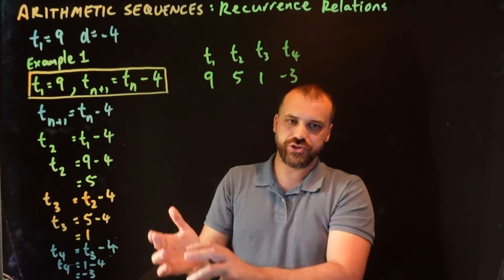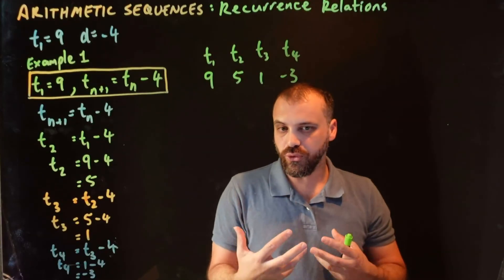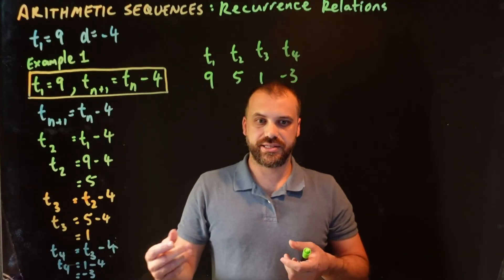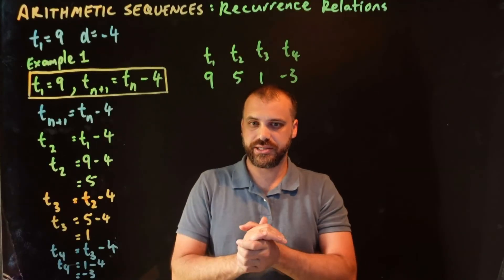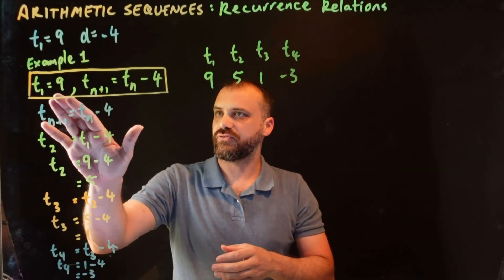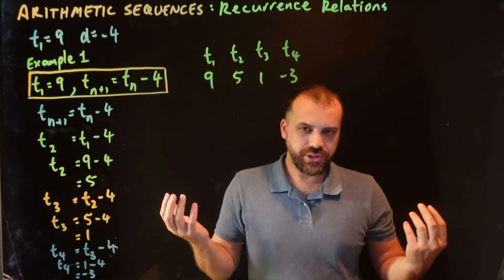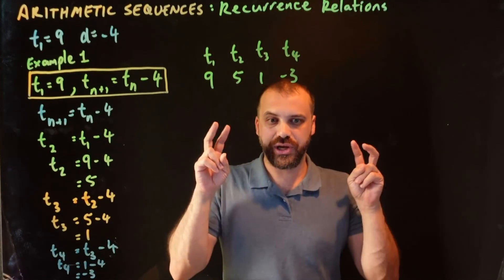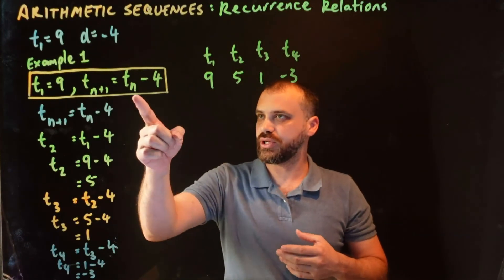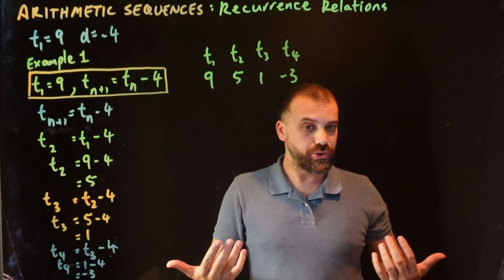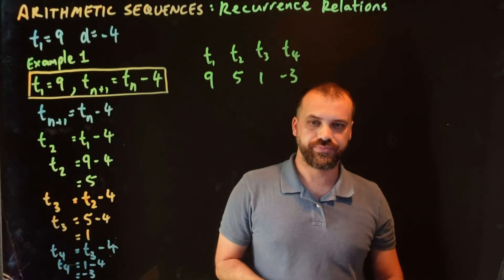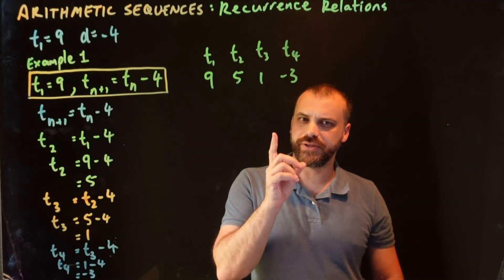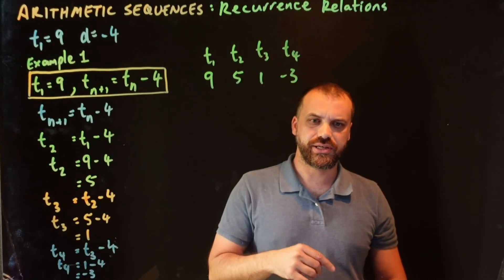All right, so this recurrence relation is just a really formal way of setting this out mathematically, of doing what you already know how to do with arithmetic sequences, but we use this fancy formula. Why am I doing this? Because you need to be able to read mathematics. You need to be able to look at this formula and interpret what it's asking you to do, and then be able to do it. Well, we're going to do something with this, I think, in the next video.